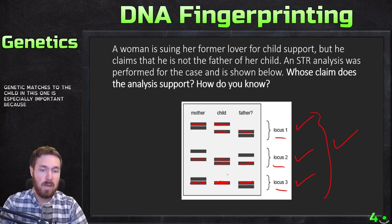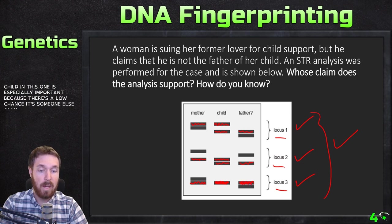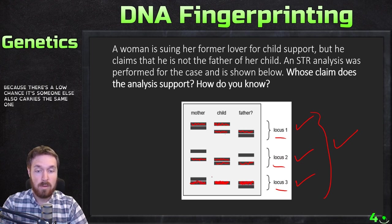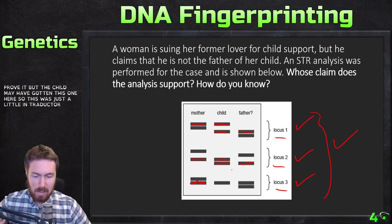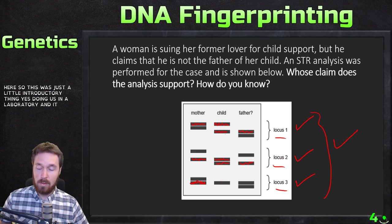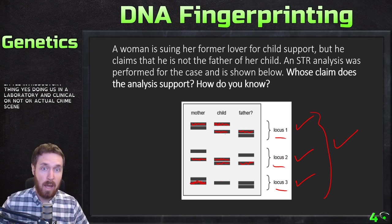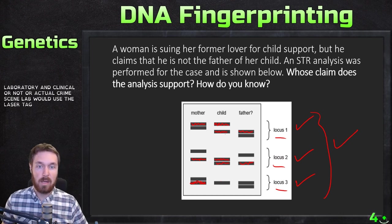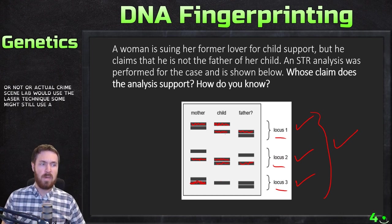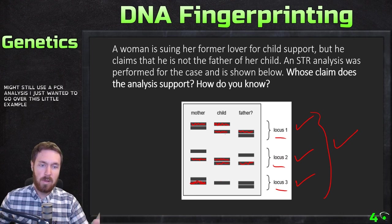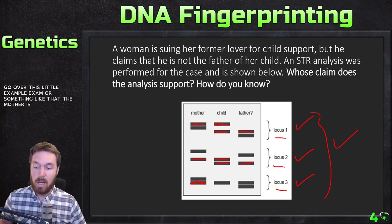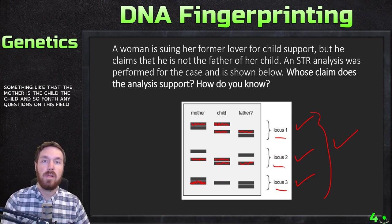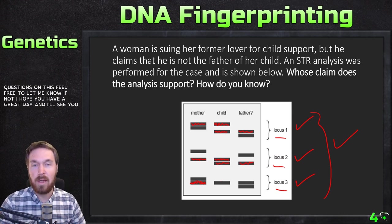This is especially important because there's a low chance someone else also carries the same allele combination. This was only checking three loci, but it suggests the father has enough genetic matches to the child. In an actual clinical or crime scene lab, the laser technique would be used rather than gel electrophoresis. This kind of analysis — figuring out who the father is or matching crime scene DNA — could appear on an exam. If you have any questions, feel free to let me know. Hope you have a great day — see you next time!